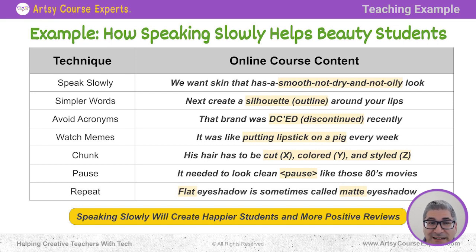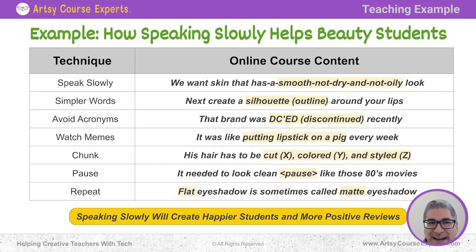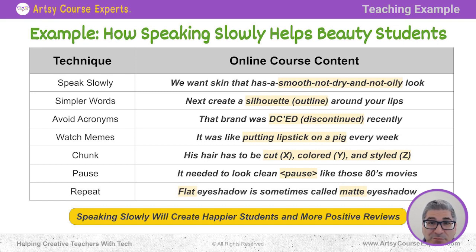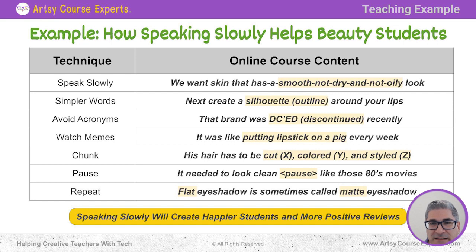Now let's watch for acronyms. 'That brand was DC recently.' If you're in the right crowd and know that acronym and industry jargon, great — but if not, you might not know what DC is. You could simply say: 'That brand was discontinued recently, so you don't want to use the DC brand.' You've explained it and broken it down with an example — much better than just using DC and losing half your students.